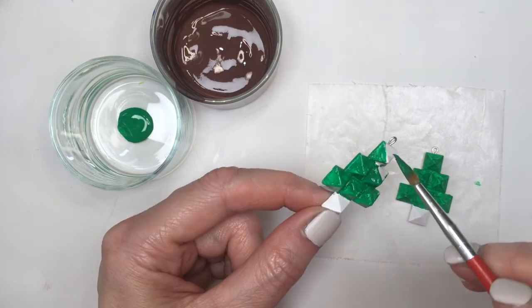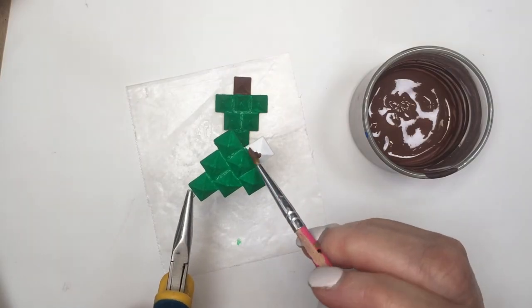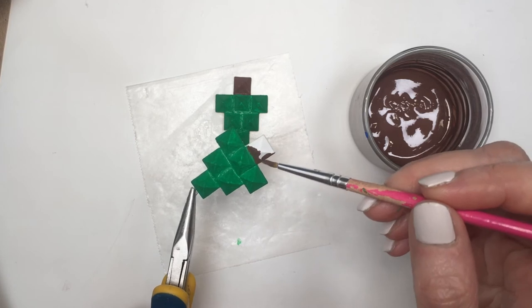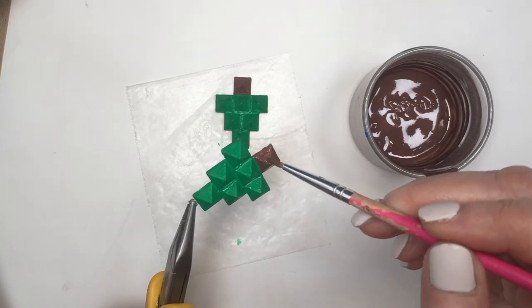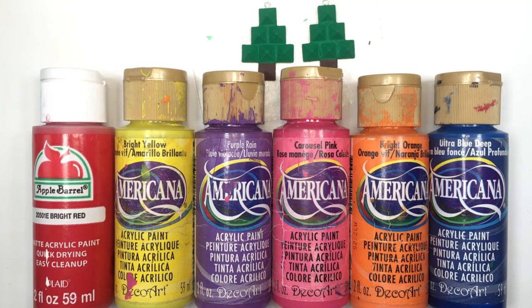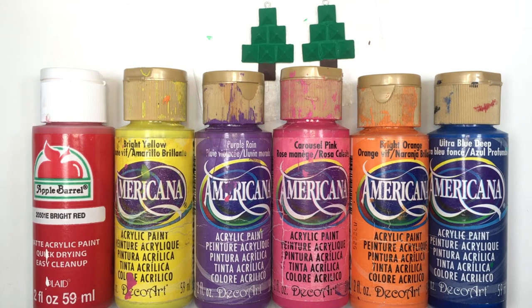Here I'm just using some pliers because I was pretty impatient to just wait for my green to dry. I'm using my pliers as a holder, but if you wait for your green to dry, you don't have to use any pliers. Then, of course, I'm adding some Christmas lights. I'm using red, yellow, purple, pink, orange, and blue acrylic paints and my dotting tool.